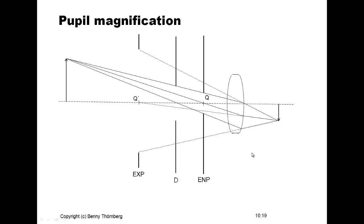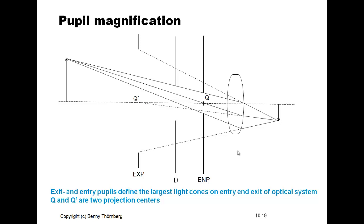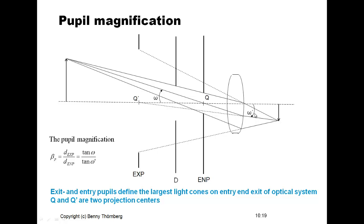The exit and entry pupils define the largest light cones on entry and exit of the optical system. Q and Q' are two projection centers. The pupil magnification is defined as the relation between the diameters of the exit pupil and entry pupil, equal to the relation between the tangents of omega and omega-prime — the angles of the principal ray passing through both projection centers at entry and exit.